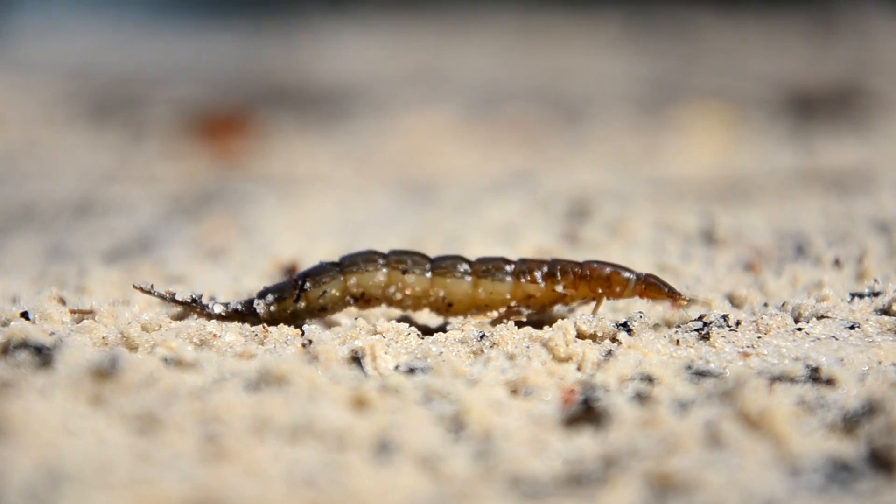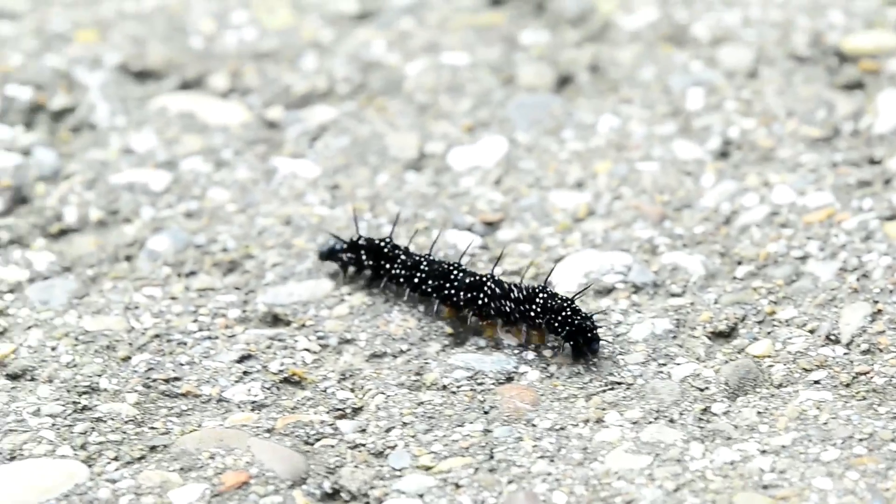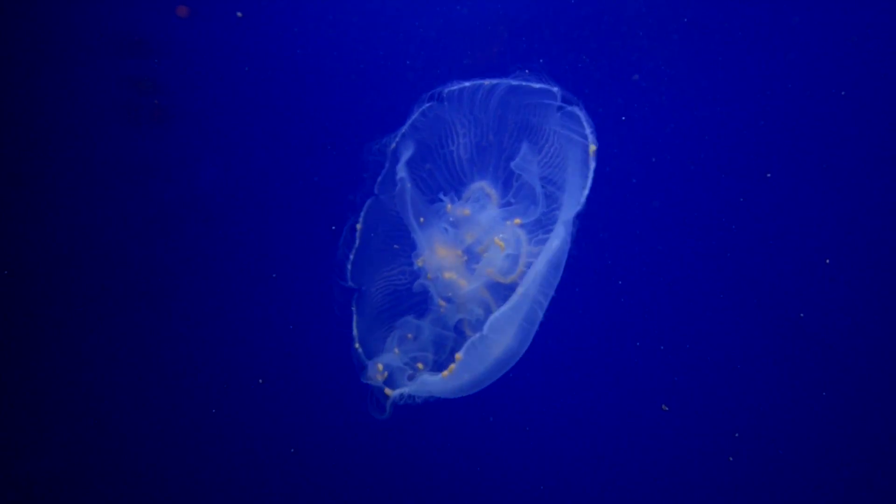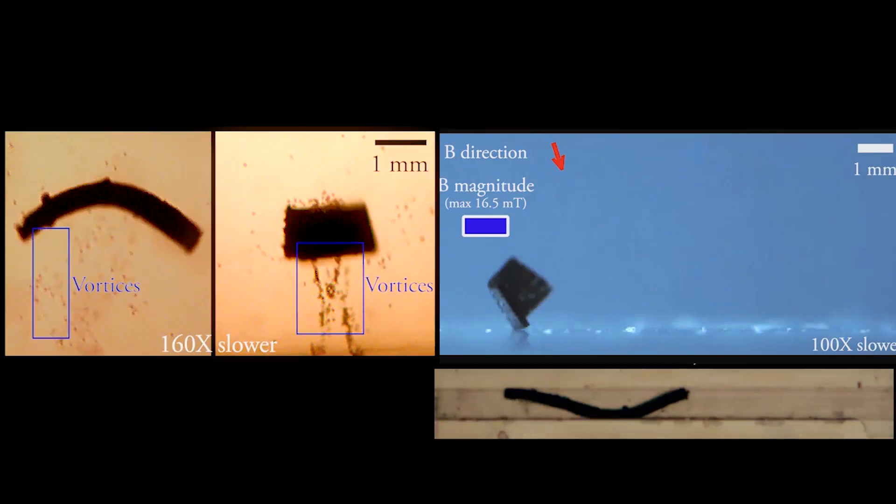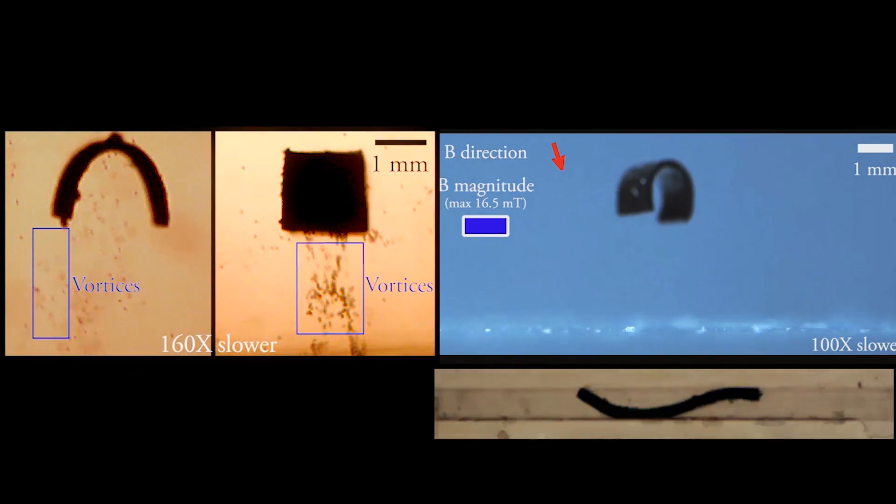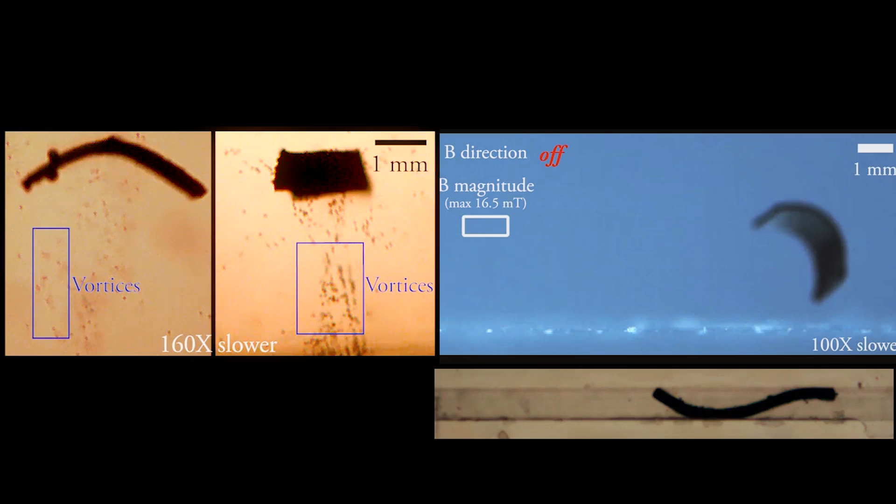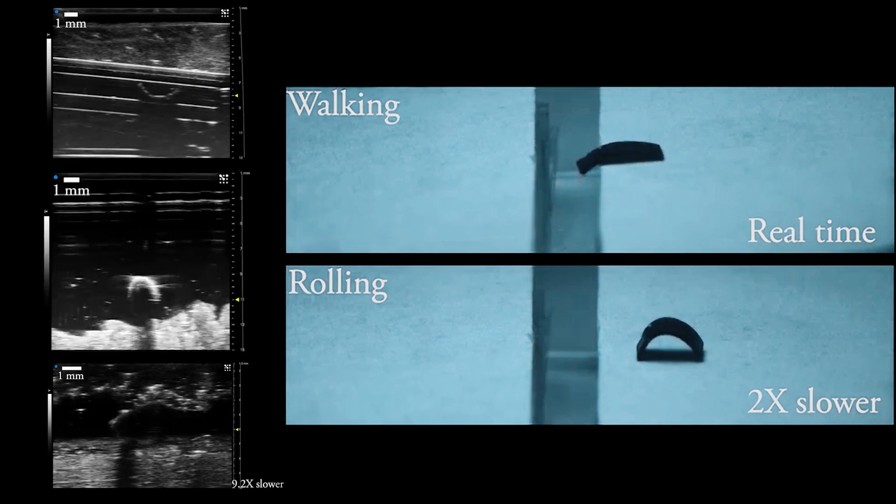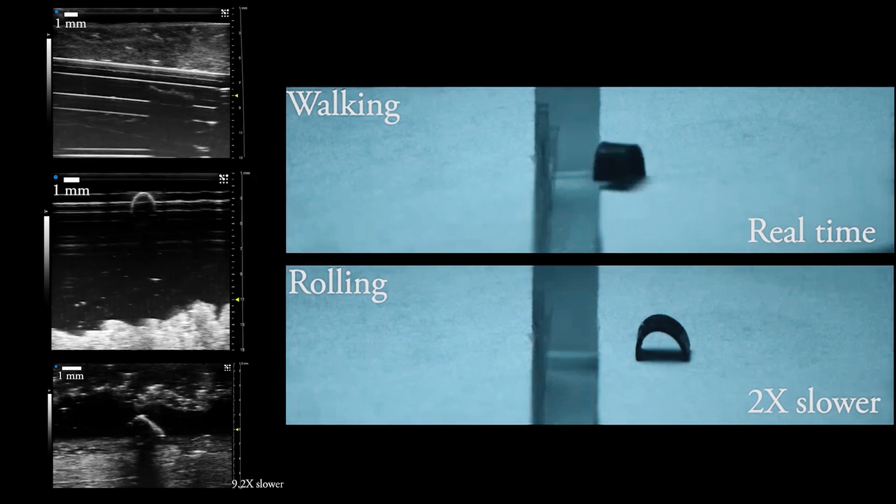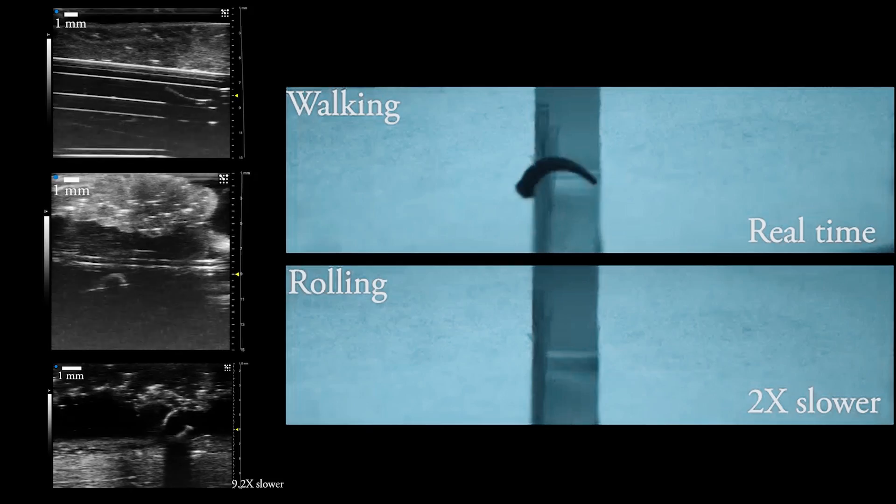The inspiration comes from soft-bodied beetle larvae and caterpillars and even jellyfish as a biological model. This multiple locomotion capability of the soft small-scale robot in complex environments is so unique that science journal Nature published the researcher's findings in its latest edition.